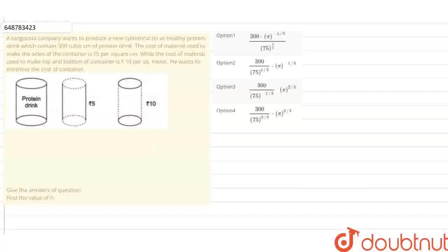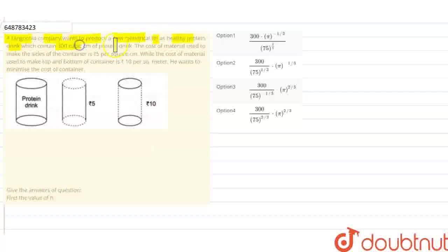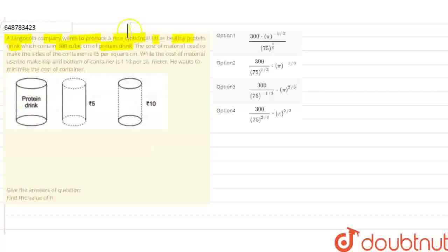Hello friends! A tangocola company wants to produce a new cylindrical tin as a healthy protein drink which contains 300 cubic centimeters of protein drink. This protein drink is in a cylinder shape with 300 cubic centimeters of capacity.